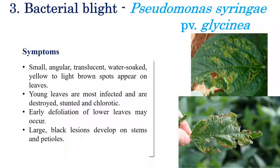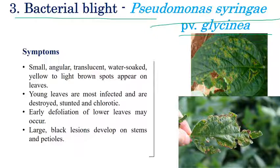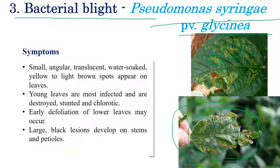The next disease is Bacterial Blight, caused by Pseudomonas syringae pv. glycinea. Small transparent water-soaked lesions can be seen on the surface of leaves. Infected leaves can be destroyed. Chlorotic lesions are also observed, and defoliation can be observed. Later, chlorotic lesions are slowly converted into black coloured masses — black coloured lesions on stems and petioles.